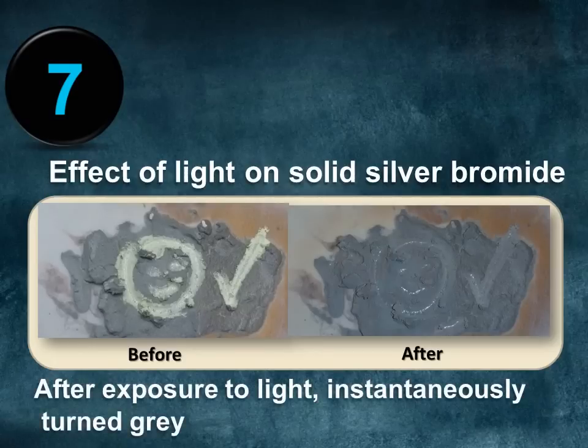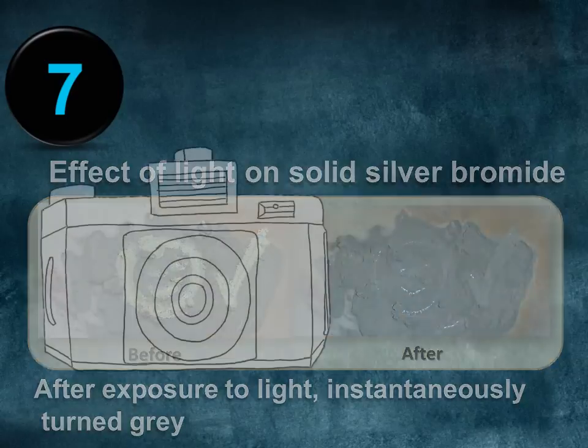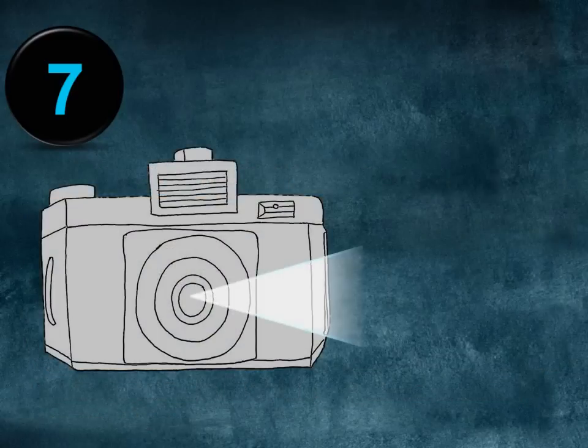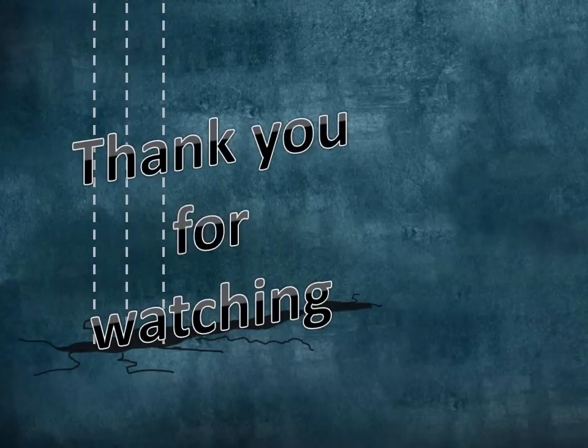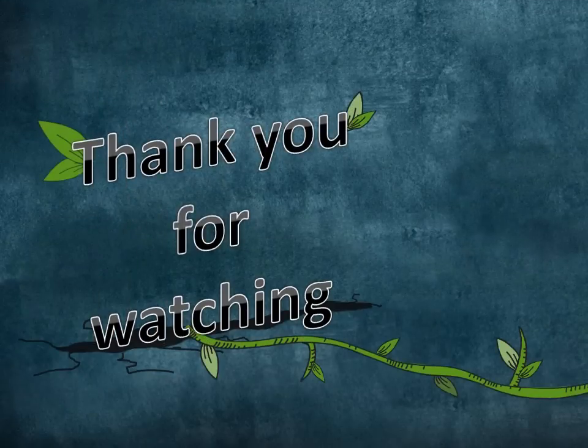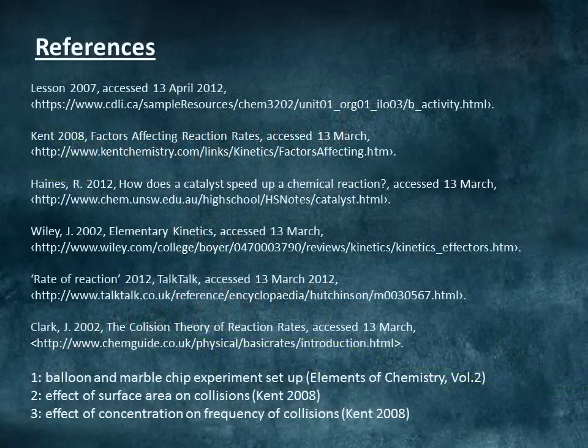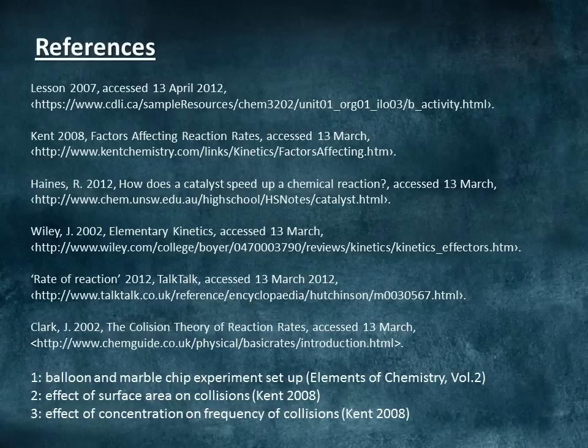Light is a form of energy. Light speeds up a reaction by providing more energy to particles, resulting in an increased frequency of collisions and allowing particles to reach the activation energy required. As this reaction is light sensitive, it is often used in modern cameras to create a photographic image.